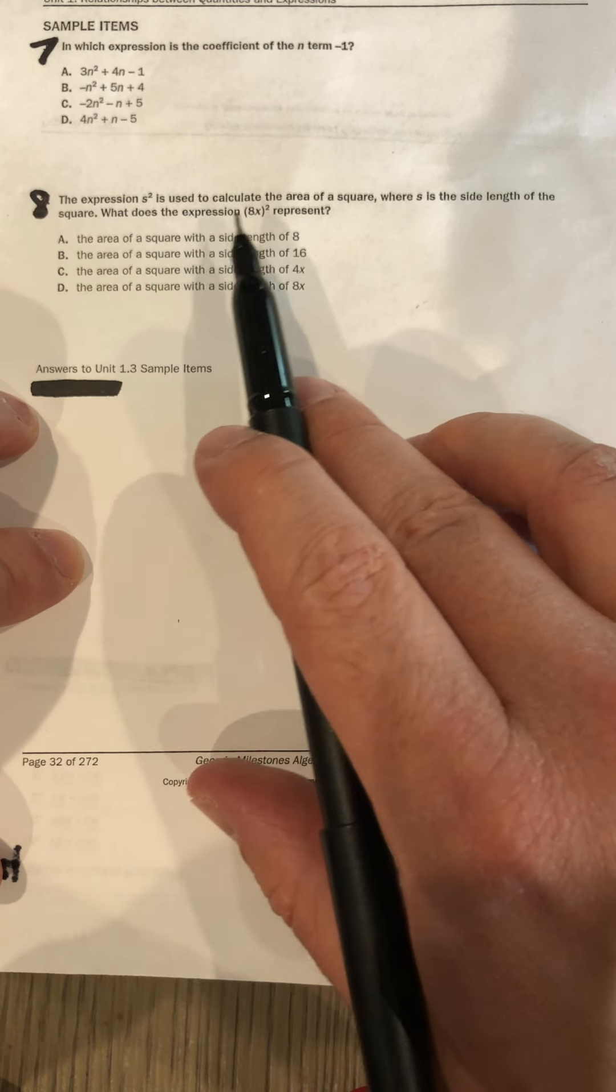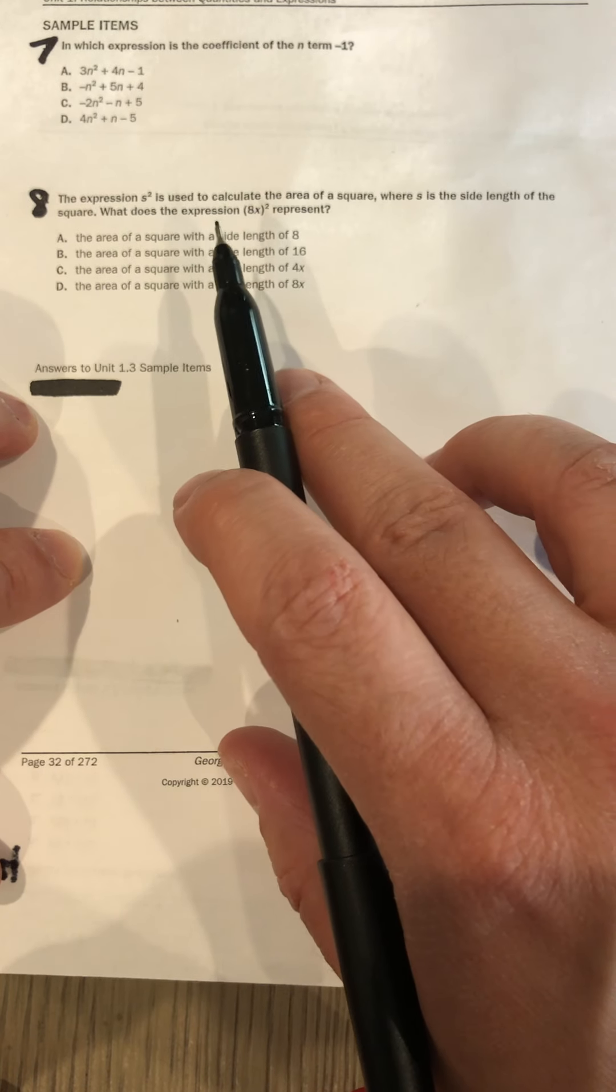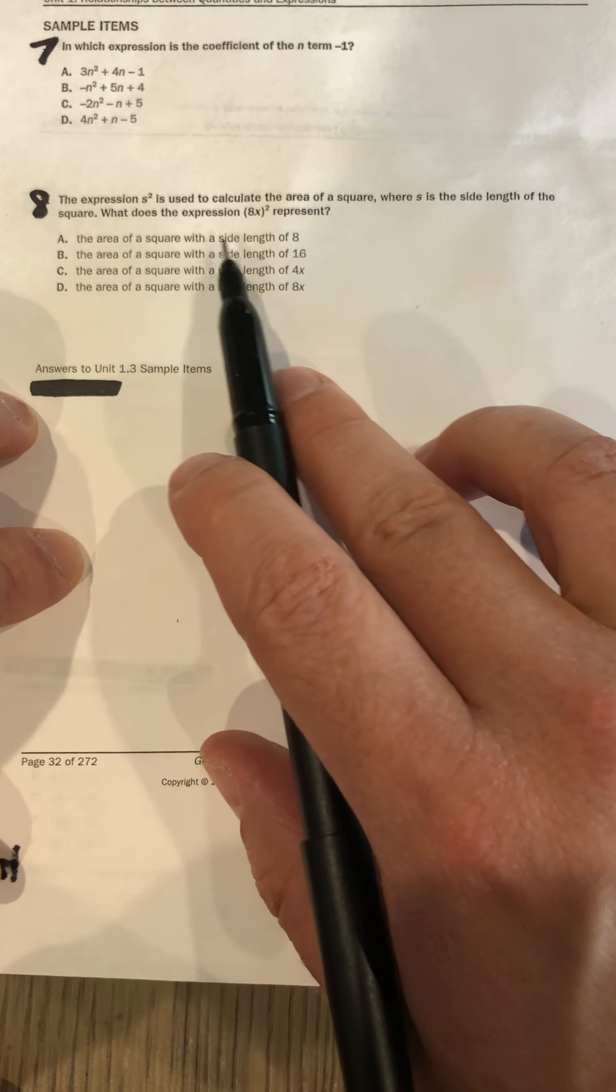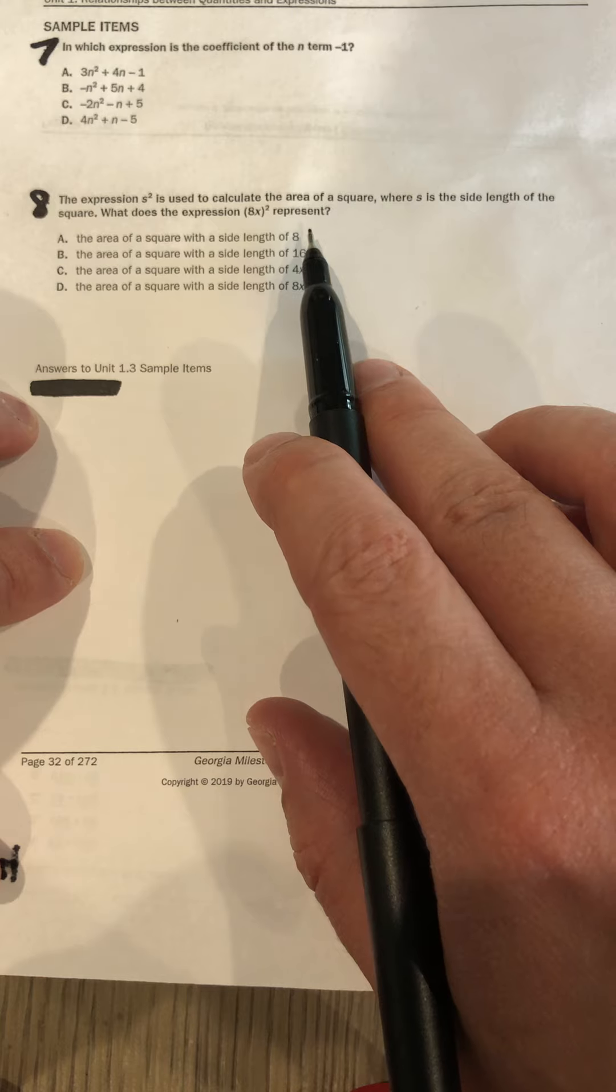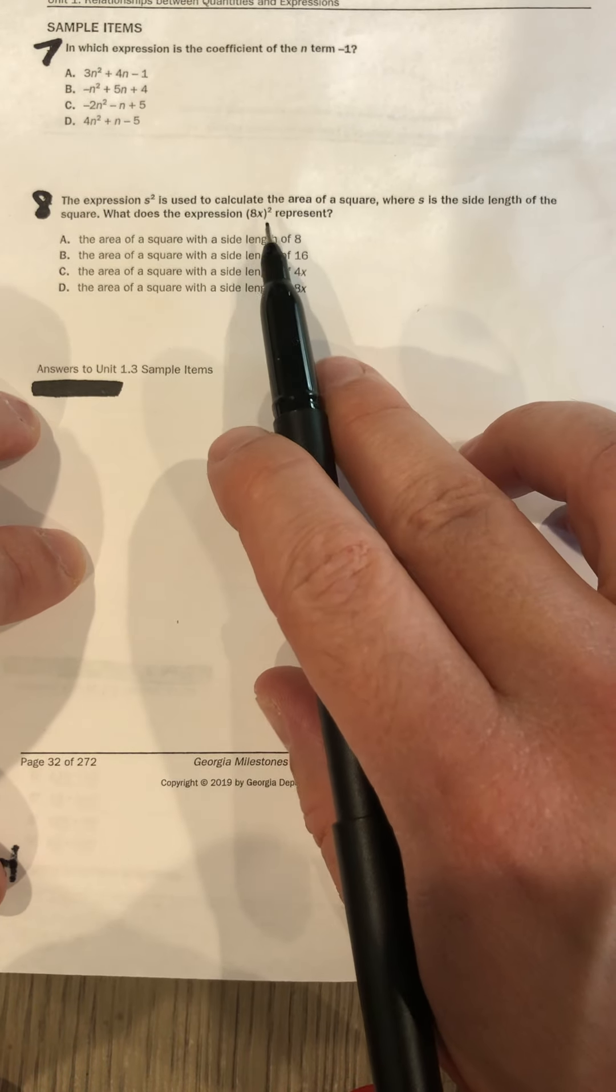Okay. The expression s squared is used to calculate the area of a square, where s is the side length of the square. What does the expression 8x squared represent? Okay, well this is way simpler than it seems to be. There's an 8x where what used to be s—you figure that out.